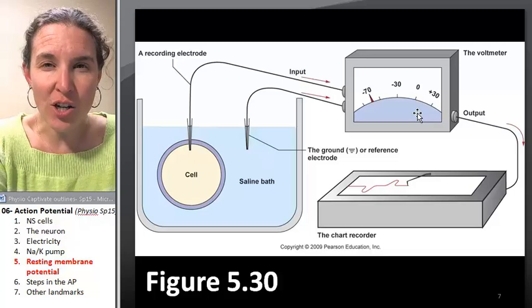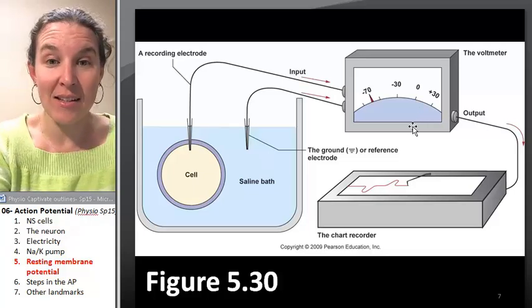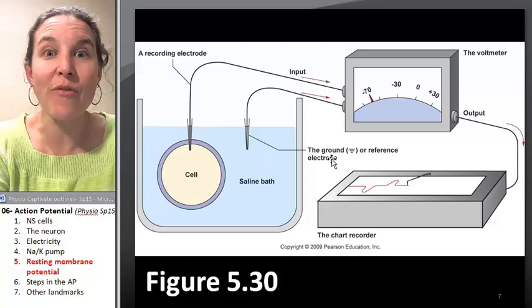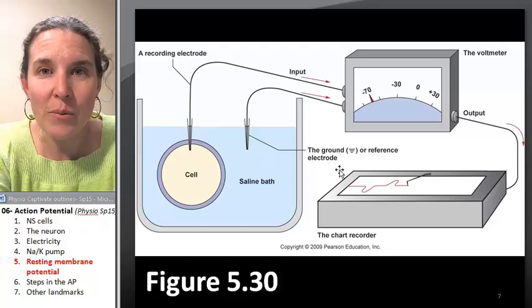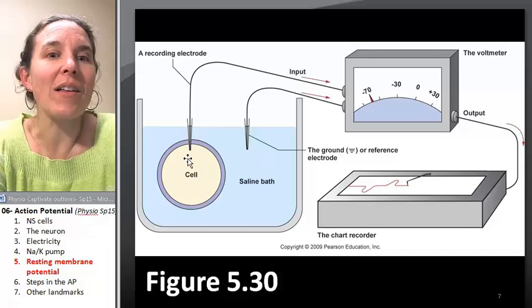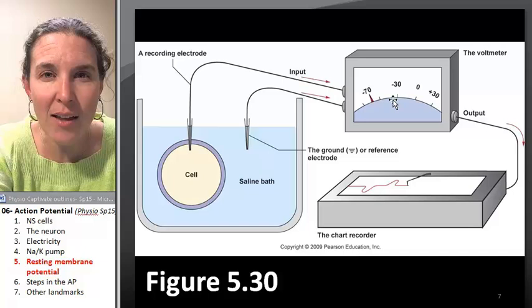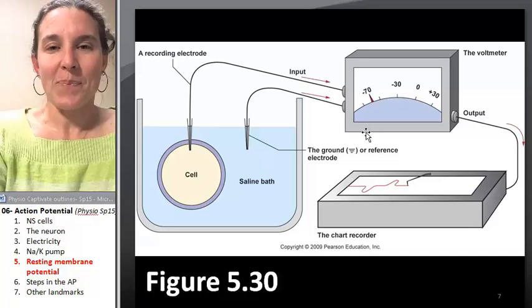And the voltmeter knows that it sets this one, the ground or reference electrode, to zero. And then it says, okay, what's the difference between them? Well, inside the cell it's much more negative. Can you visualize that?